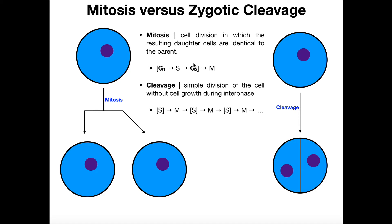So G1 and G2 are where the cell has to grow. There's also organelle replications happening — the mitochondria replicate, the centrosomes replicate, etc. The idea that the cell has to grow is one of the major things occurring in these G phases, particularly G1.